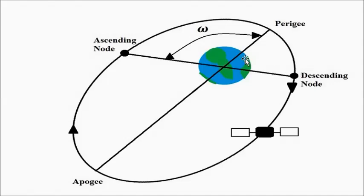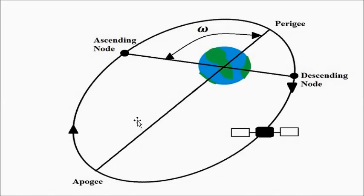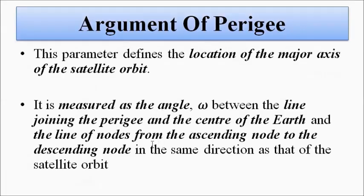These orbital parameters were discussed step by step because combining everything in one video would have been confusing. The argument of perigee is the angle formed between two lines: the line joining the center of the Earth and the perigee point, and the line joining the ascending and descending nodes. It is used to know the direction of the major axis, that is, the line joining the apogee and perigee points.